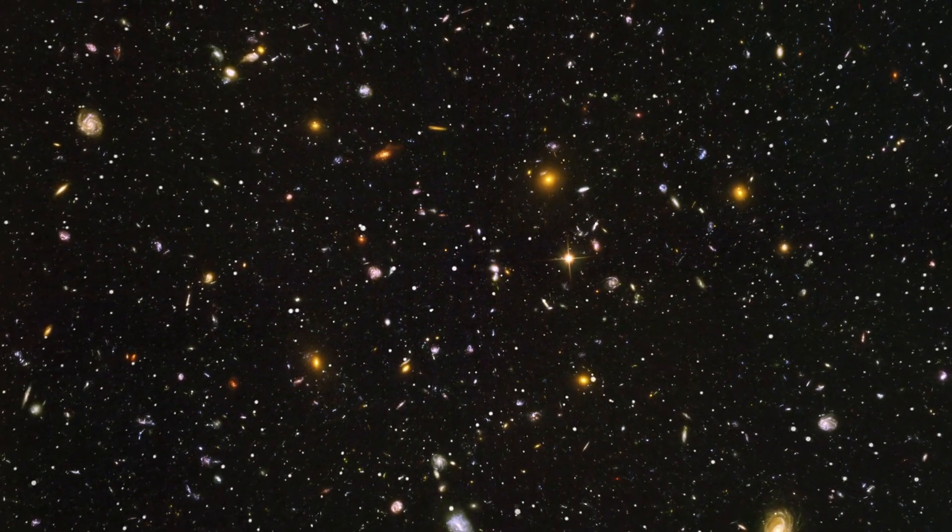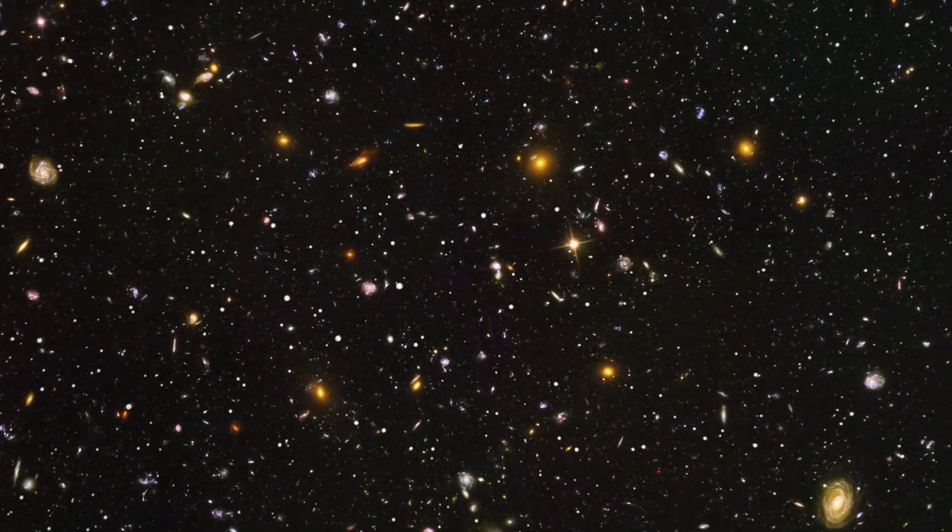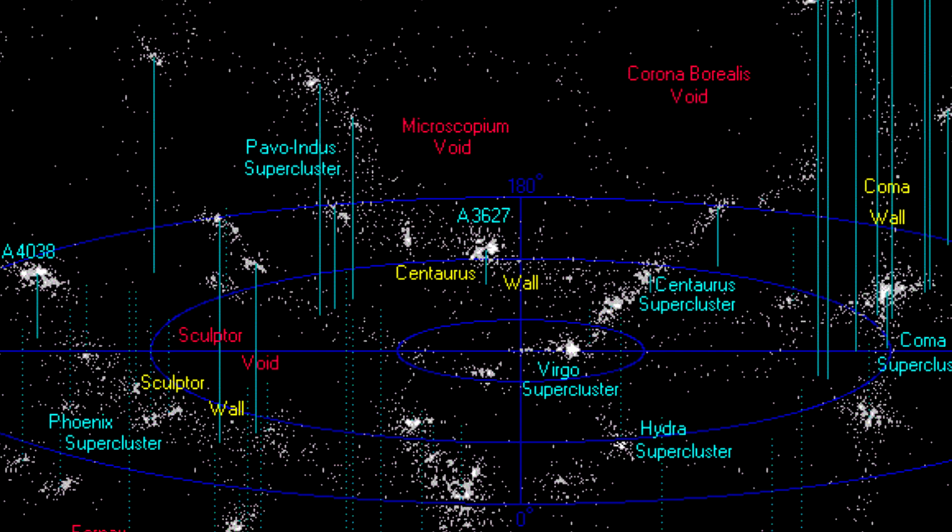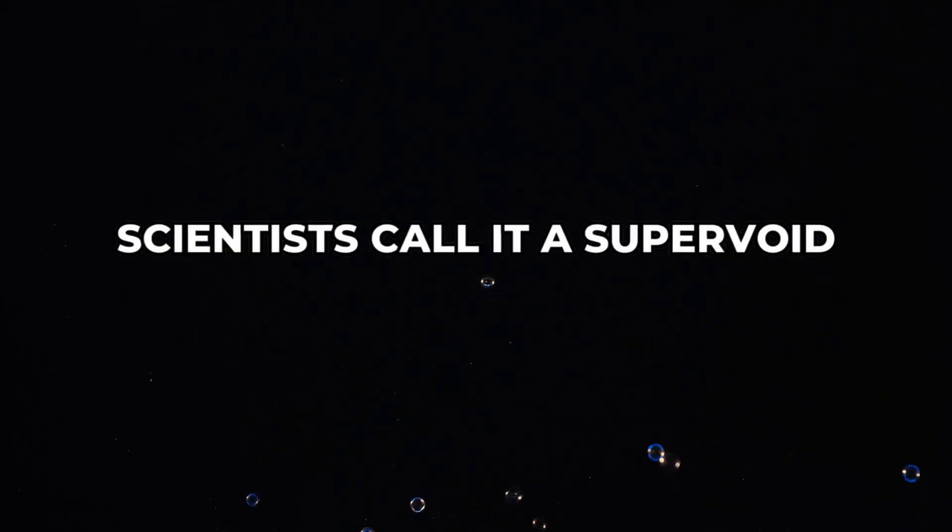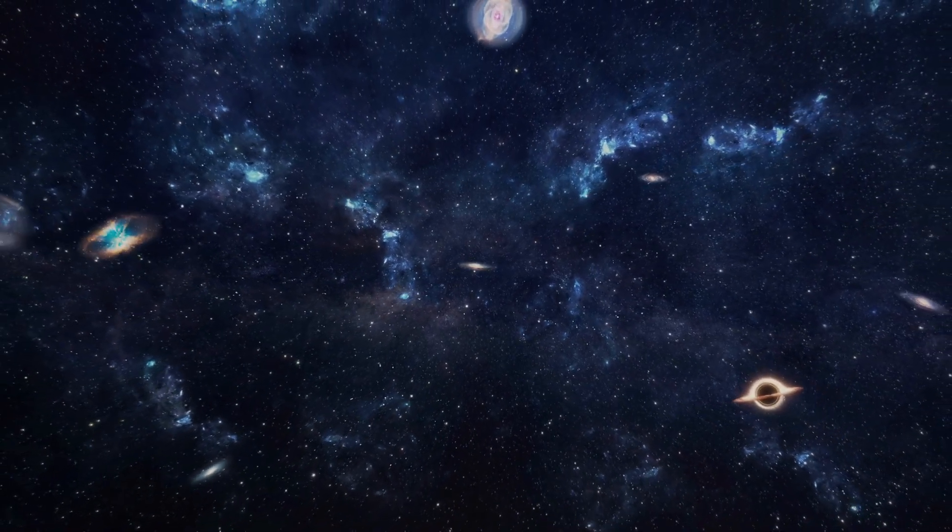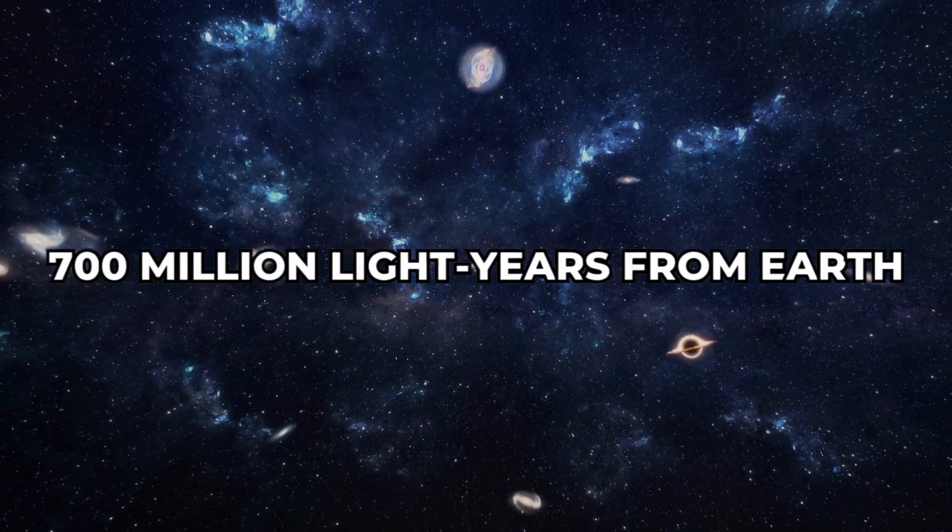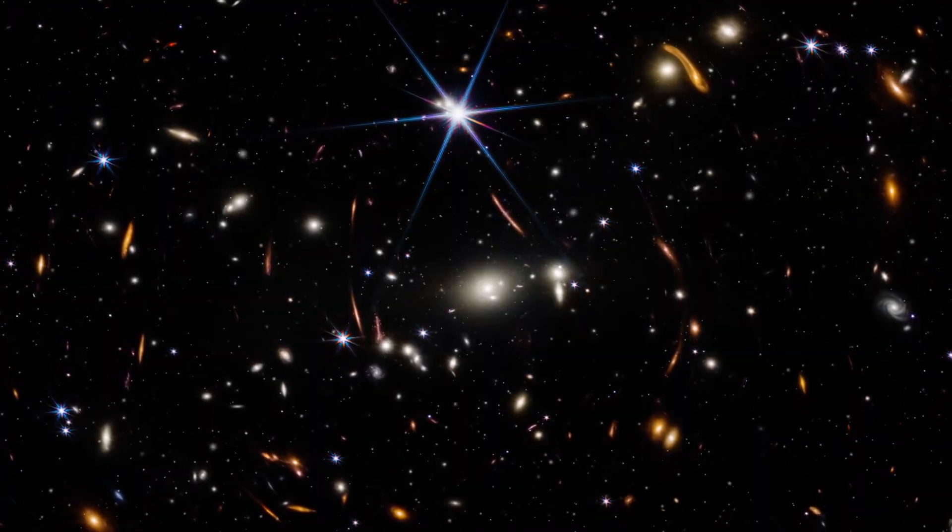Imagine a gigantic bubble with the size of about 330 million light years across. This bubble is one of the biggest empty spaces we can see in the universe, and scientists call it a supervoid. The center of this void is positioned quite far away from us, about 700 million light years from Earth.